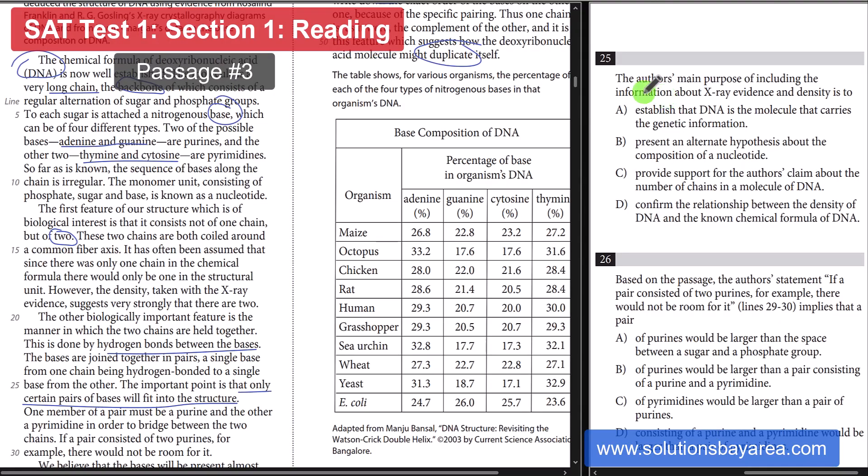Question 25. Why do they include the information about the x-ray evidence and the density? Looking back here, we've got on line 18, 19, they type a density here, and the x-ray evidence, which suggests that there are two chains that form the DNA. So, that is going to be choice C.